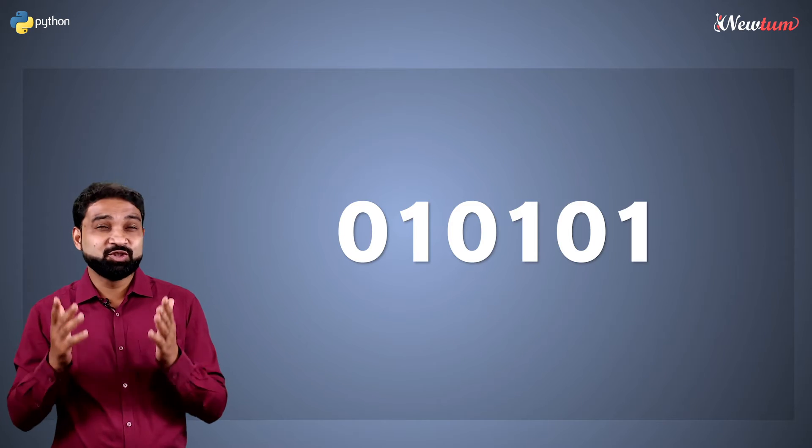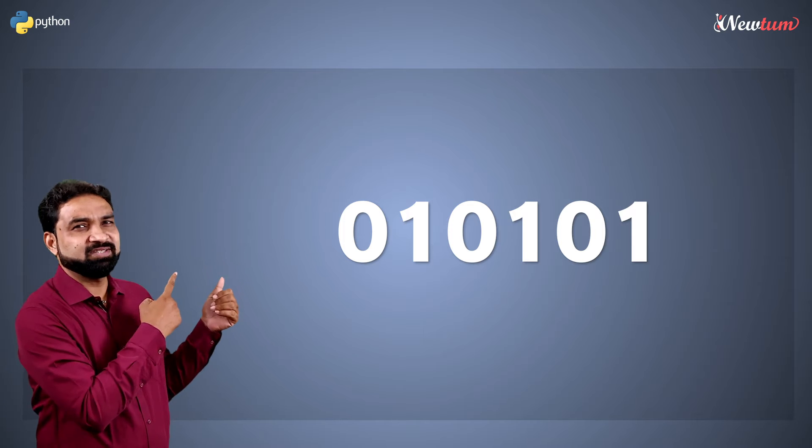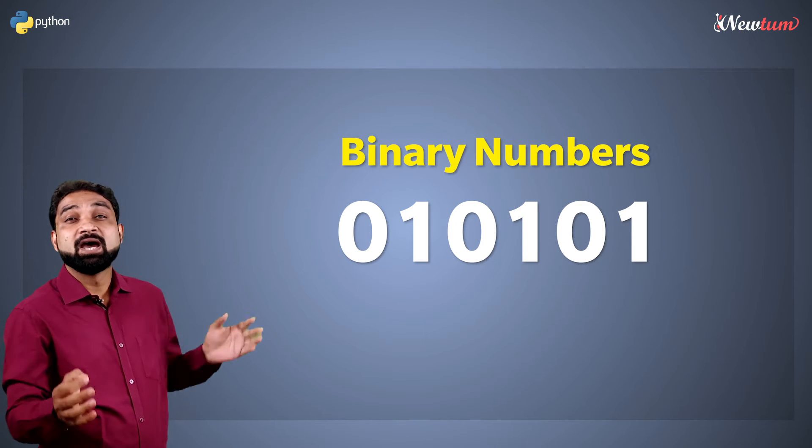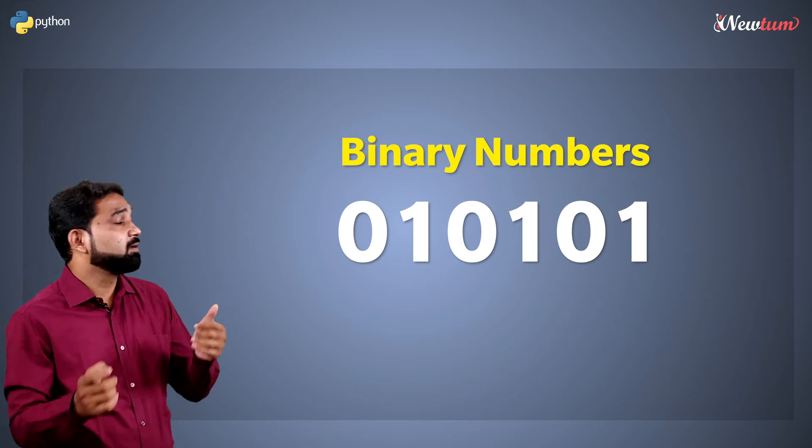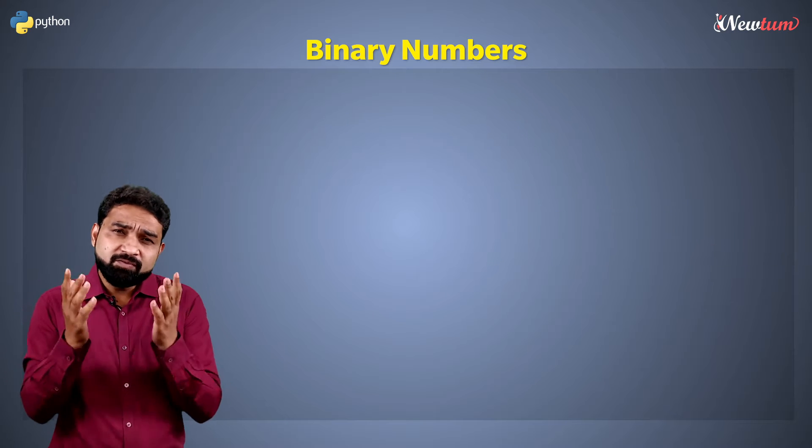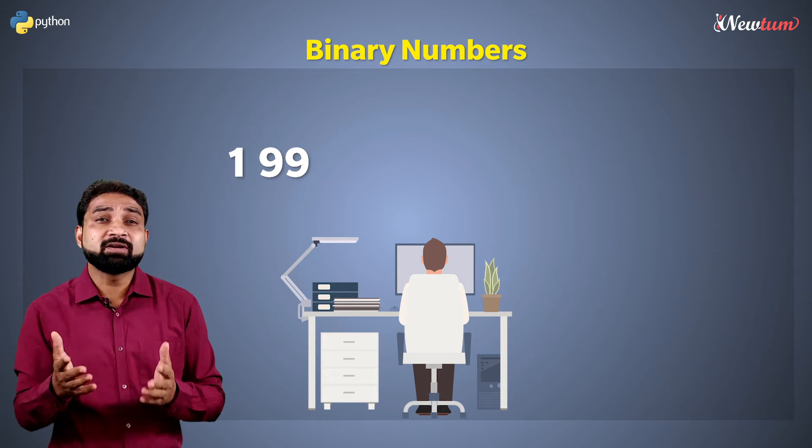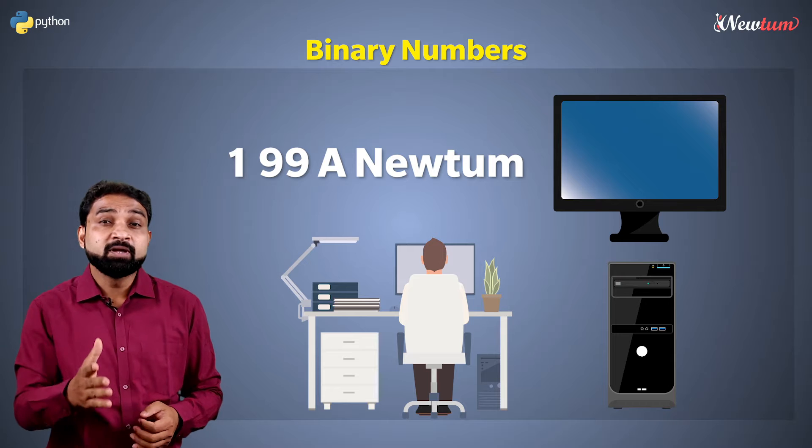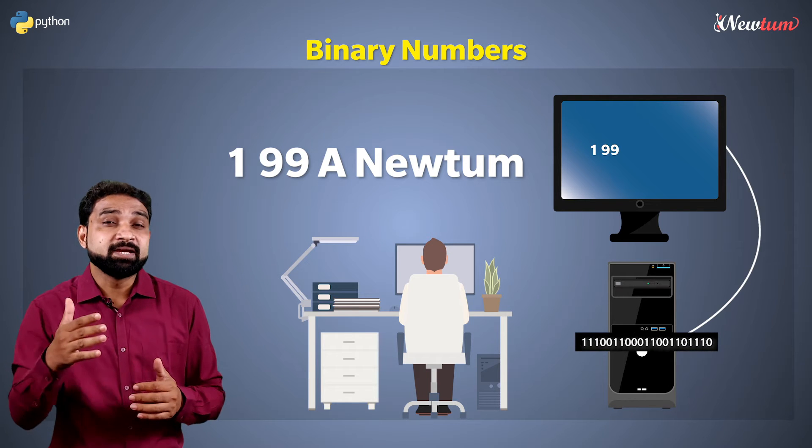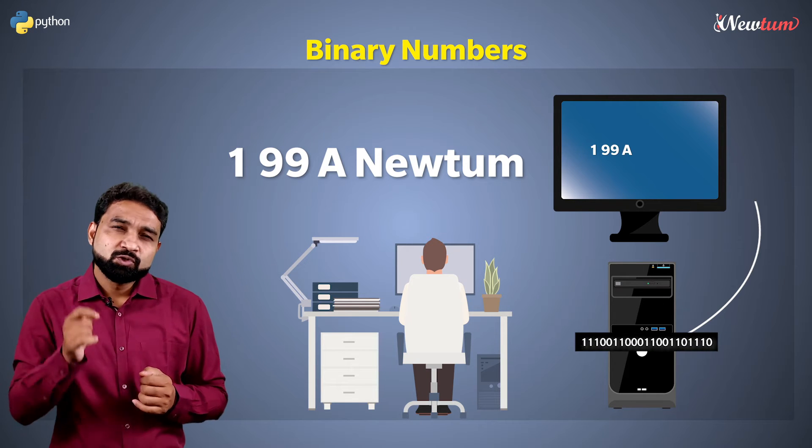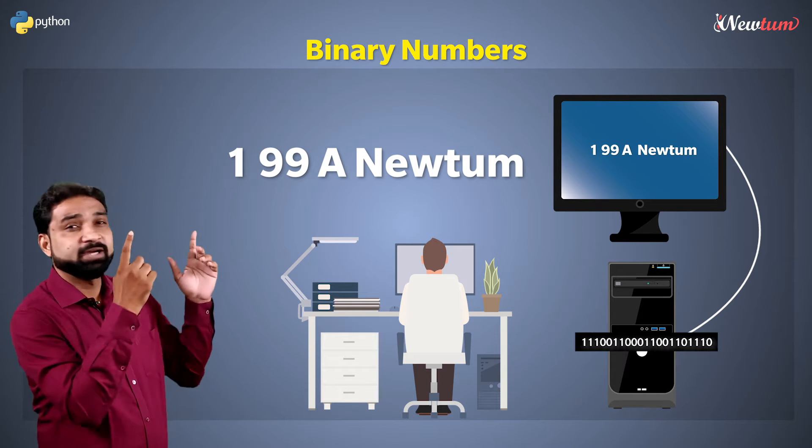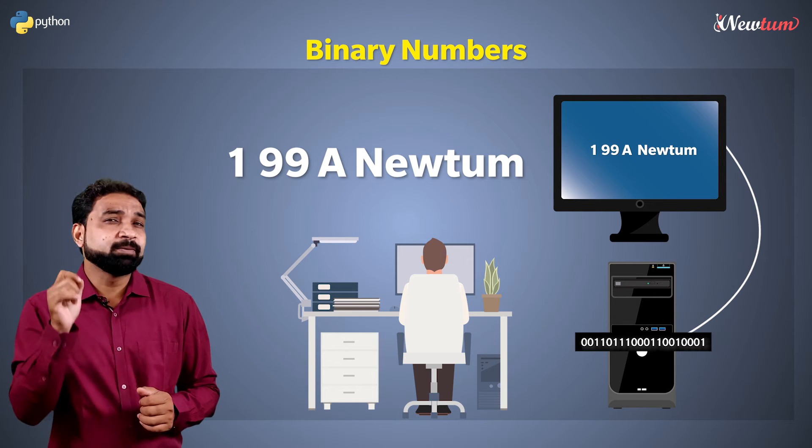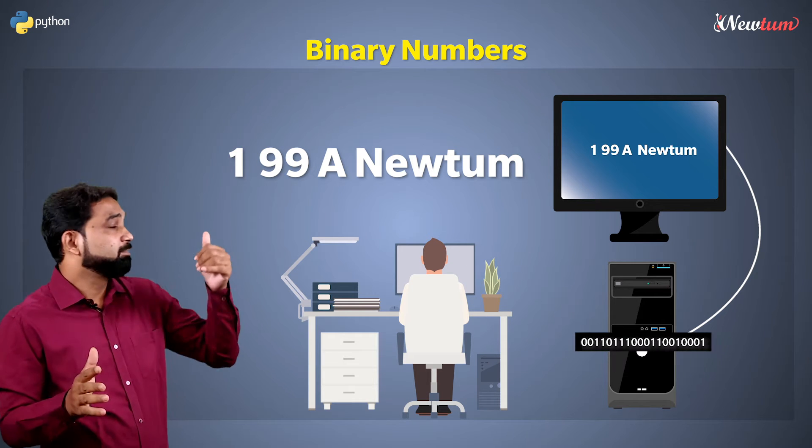0 1 0 1 0 1. You know what is this? These are binary numbers and the computer only understands binary numbers. Even when you enter 1, 99 or character like 'a' or string like 'new term', the computer converts them to binary and then processes them. So binary numbers are essential and none of the computers will work without binary numbers.